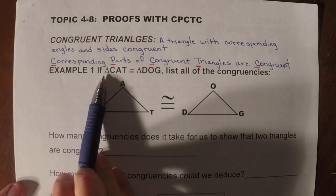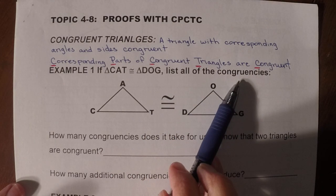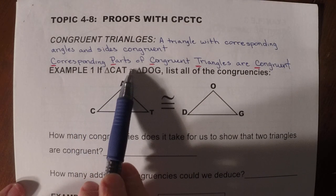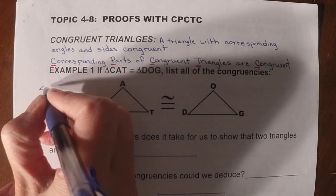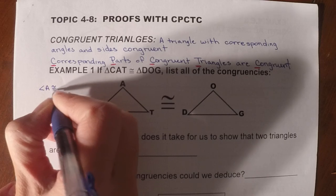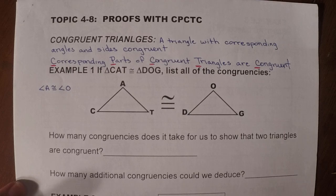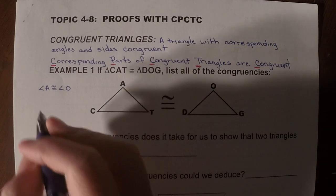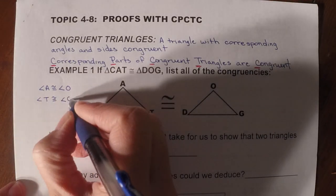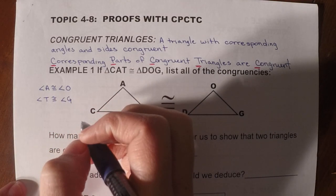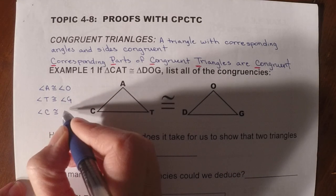So if they tell us that triangle CAT is congruent to triangle DOG, list all of the congruencies. Well, we just said that if the triangles are congruent, then both the sides and the angles are congruent. So we said angle A is congruent to angle O, angle T congruent to angle G, and angle C congruent to angle D.